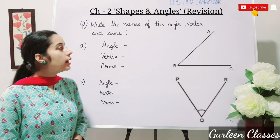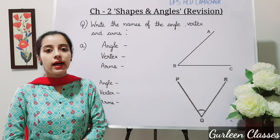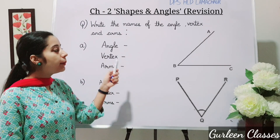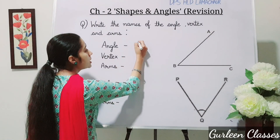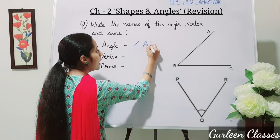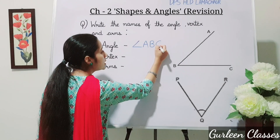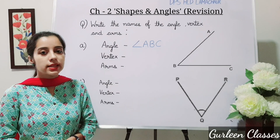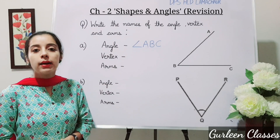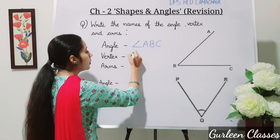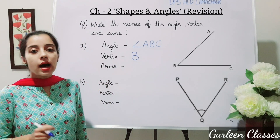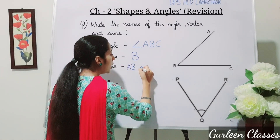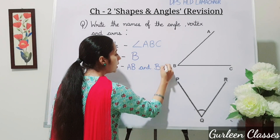Now let us do the question: write the names of the angle, vertex, and arms. Students, here you can see the figure. What is the angle? The angle is ABC. So we write the symbol for angle and then A, B, and C in capital letters. What is the vertex? I told you the vertex is always in the middle of the angle, so the vertex here is point B. What are the arms? The arms are AB and BC.